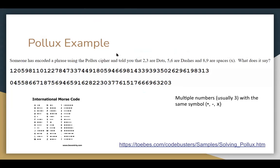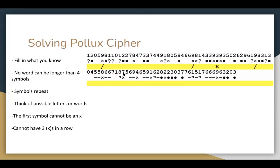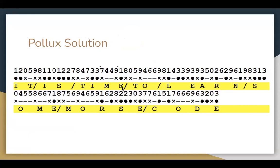You can't have three X's in a row because two X's separate words and one X separates letters. Three X's in a row would be unusual — maybe for paragraphs in actual writing, but not in these problems. And that covers Pollux. Now we're getting into Morbid.